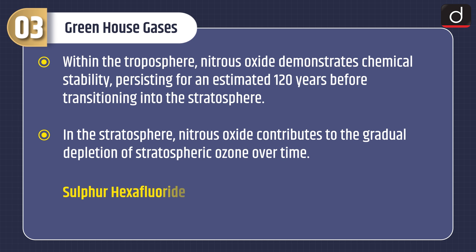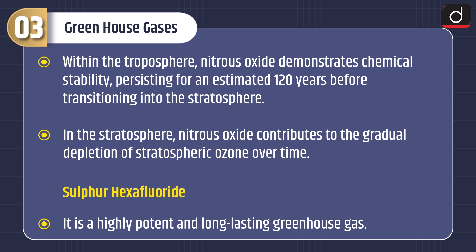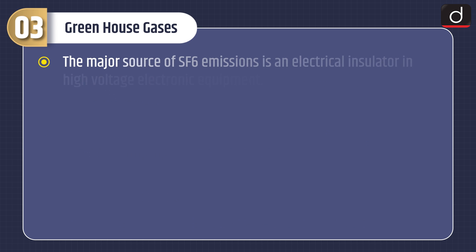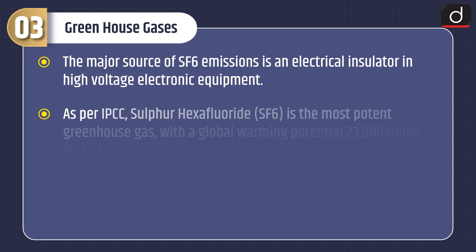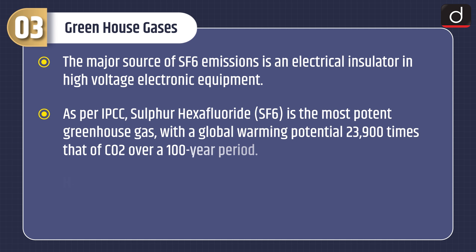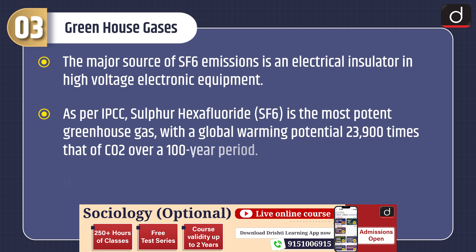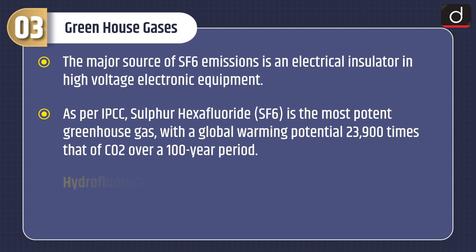Fourth, sulfur hexafluoride (SF6): it is a highly potent and long-lasting greenhouse gas. The major source of SF6 emissions is its use as an electrical insulator in high-voltage electronic equipment. As per the IPCC, sulfur hexafluoride is the most potent greenhouse gas, with a global warming potential 23,900 times that of carbon dioxide over a 100-year period.